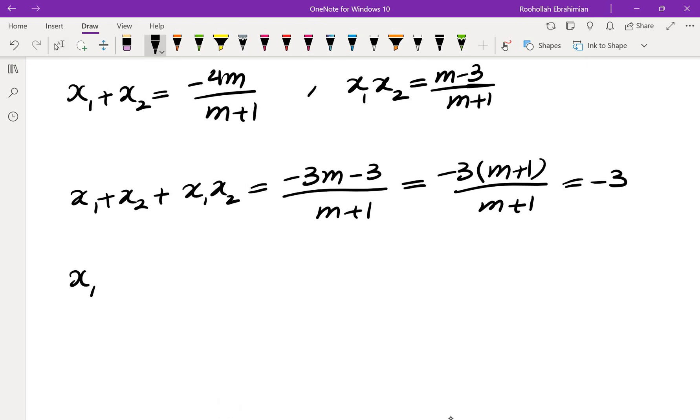If you add 1 to both sides we get x₁ + x₂ + x₁x₂ + 1 = -2. We can factor the left side so that would be (x₁+1)(x₂+1) = -2 which is a negative number. That means one of the two parentheses must be negative and the other one must be positive.